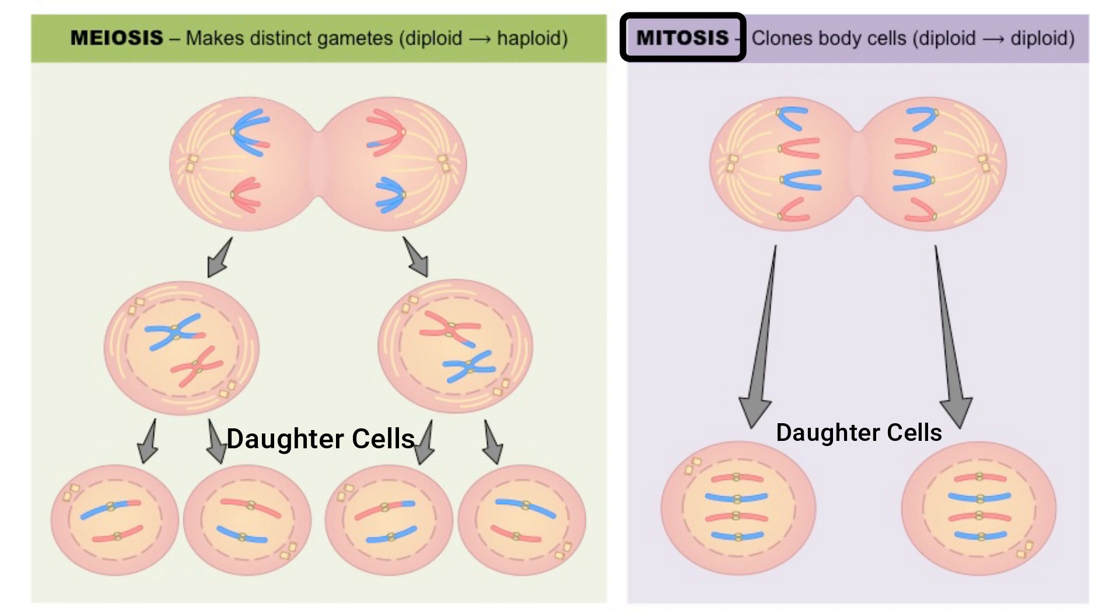While mitosis produces daughter cells that are identical to the parent cells, the goal of meiosis is to produce daughter cells with half of the chromosomes that the parent cell has. These daughter cells are called gametes, also known as sperm or egg cells.